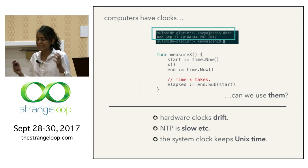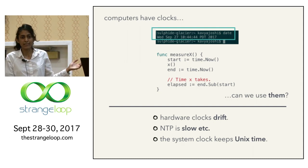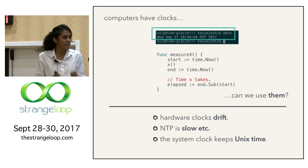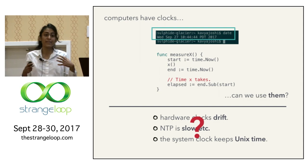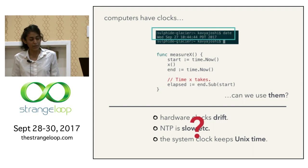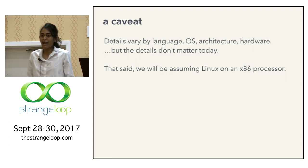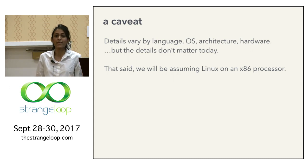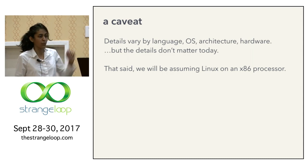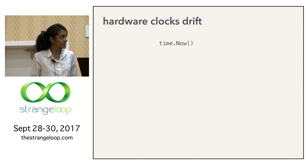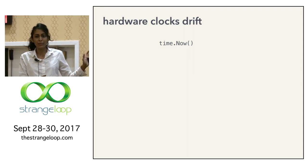The party-line answer goes like this: hardware clocks drift, NTP, and the system clock keeps Unix time. But what are the real problems with this? What are the properties we want from our timekeeping mechanism that these don't provide? To answer that, we're going to delve into the system clock and Unix time to see how they work. The details vary by platform, but the higher-level concepts remain pretty much the same — we'll be assuming Linux running on an x86 processor.